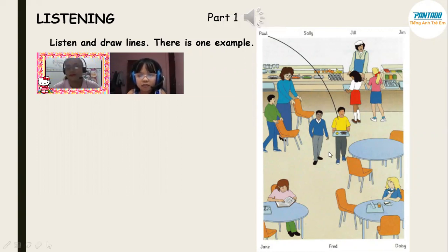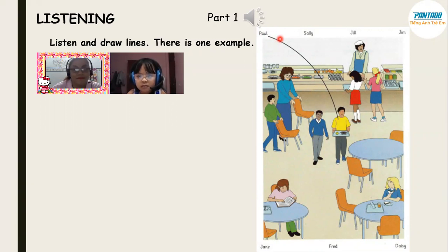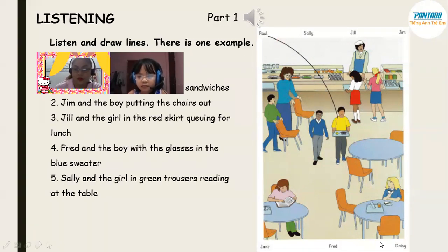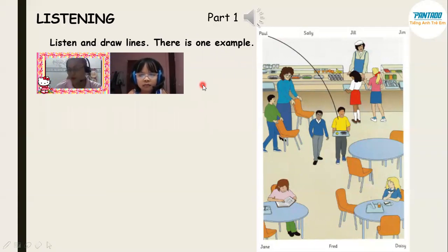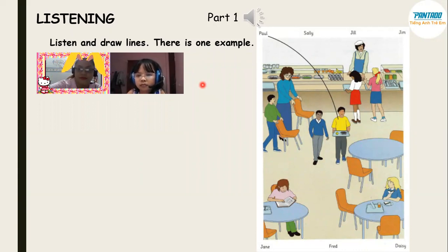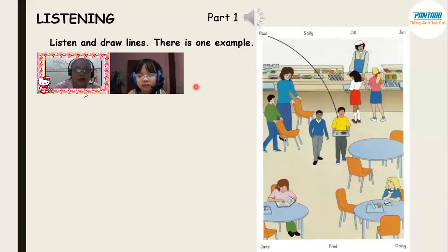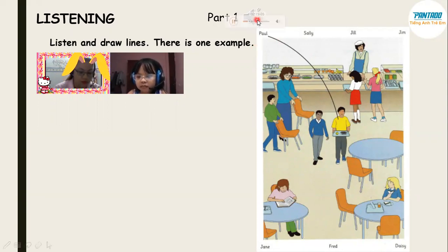Part one. Look at part one, look at the picture, listen and look. There is one example. Hello, Sam. Are you hungry? Oh, hello, Miss Green. Yes, I am. Are these children in your class? Yes. There's my friend Paul — is he the boy who's carrying his lunch to the table? Yes, he's got French fries and an apple. Can you see the line? This is an example. Now you listen and draw lines. Who's the girl with the long blonde hair? Do you mean the girl who's eating sandwiches? Yes. That's Daisy. I like her.